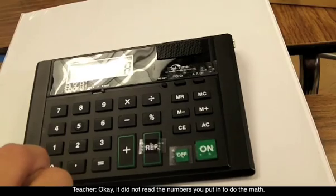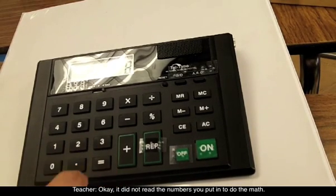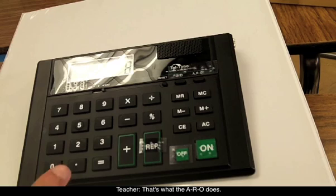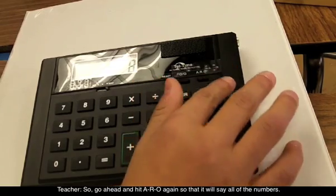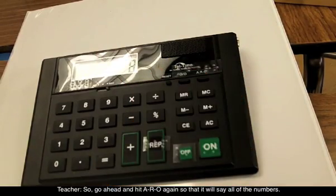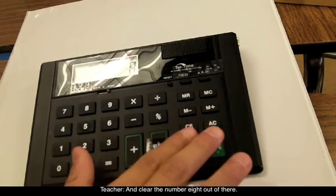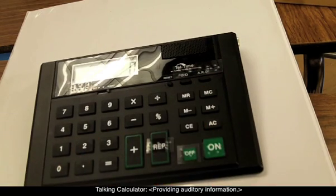Equal. Eight. It did not read the numbers you put in to do the math. That's what the A-R-O does. So go ahead and hit A-R-O again so that it will say all the numbers. There you go, and clear the number eight out of there.